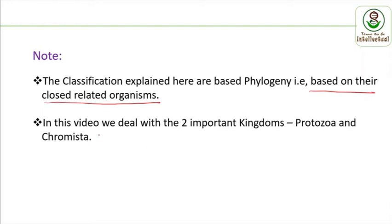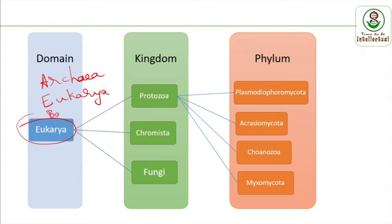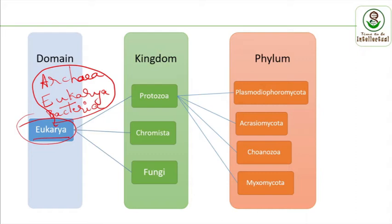In this video we deal with two important kingdoms: Protozoa and Chromista. Under the phylogeny classification we have three important domains: Archaea, Eukarya, and Bacteria. This classification was given by Karl Weiss. The organisms we deal with in plant pathology come under Eukarya and Bacteria — fungi and other groups fall under Eukarya.